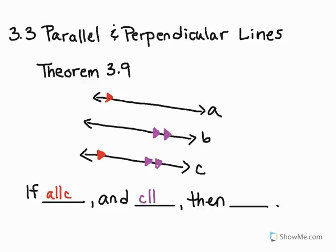So C is parallel to B. Now I want you to look at this because we now know the transitive property, and it states that if we have this situation where they have one piece in common, then I can skip by just saying that line A is parallel to line B.